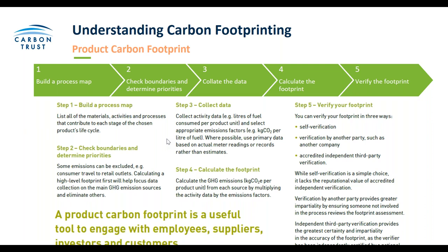Step two is to check the boundaries and determine priorities — what you would deem acceptable to exclude, such as consumer travel to retail outlets or product reuse considerations. Calculating a high-level footprint first will help focus data collection on the main greenhouse gas emission sources and help eliminate others. Step three is to collate the data, involving collecting activity data such as litres of fuel consumed per product unit, and selecting appropriate emission factors such as kilograms of CO2 per litre of fuel. Primary data is always preferential when looking at a product carbon footprint.